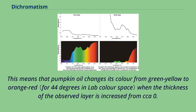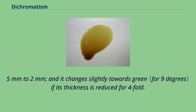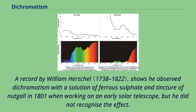This means that pumpkin oil changes its color from green-yellow to orange-red when the thickness of the observed layer is increased from approximately 0.5 mm to 2 mm, and it changes slightly towards green if its thickness is reduced fourfold. A record by William Herschel shows he observed dichromatism with a solution of ferrous sulfate and tincture of nut gall in 1801 when working on an early solar telescope, but he did not recognize the effect.